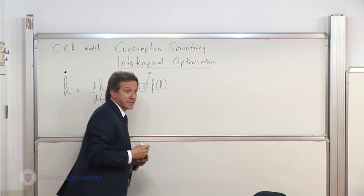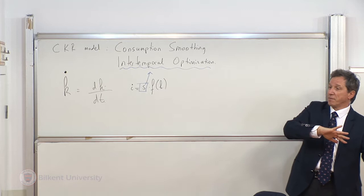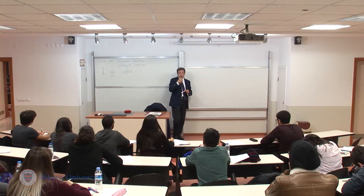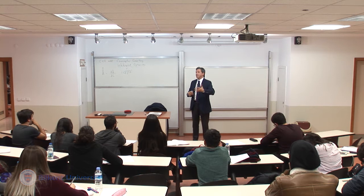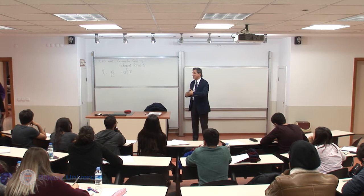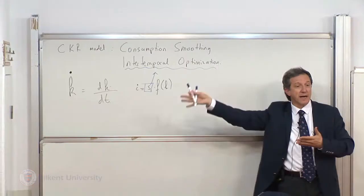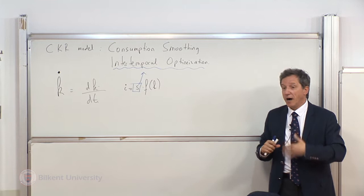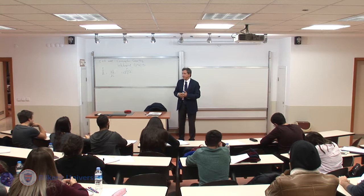So what we shall do today is we are going to intertemporally optimize over savings, or the other side of the coin, consumption. If you know savings, you know consumption and vice versa. We are going to choose an optimal path for consumption. Under the steady state, the rate of growth in a neoclassical model is zero, irrespective of whether you have intertemporally optimized or not. The essence will not change. However, the technique will enable us to enjoy the upcoming endogenous growth models.